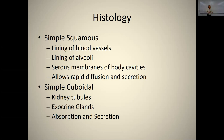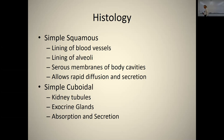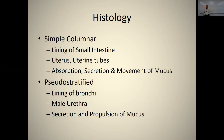Simple cuboidal epithelium is a single layer of square-shaped cells. You'll find it in kidney tubules and some exocrine and endocrine glands — for example, the follicular cells of the thyroid gland are simple cuboidal. Their function is absorption and secretion. Simple columnar epithelium is best found lining the small intestine and the uterus, fallopian tubes, allowing absorption, secretion, and secretion of mucus.